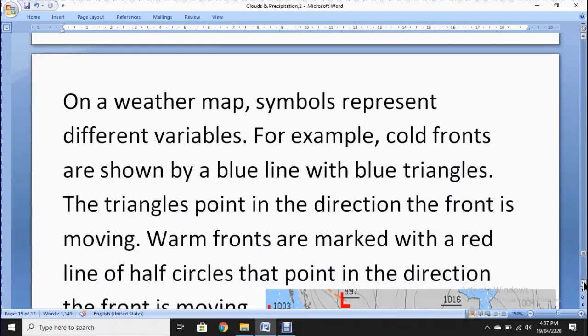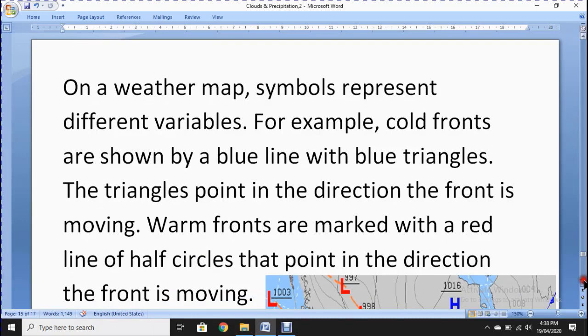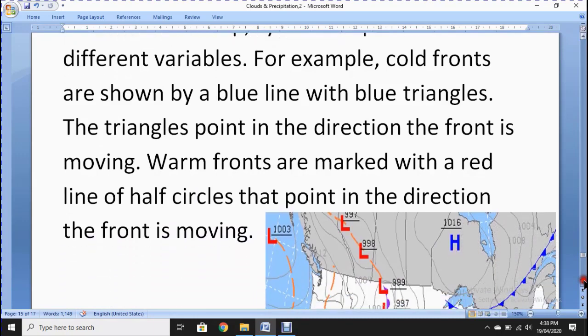On a weather map symbols represent different variables. For example, cold fronts are shown by a blue line with blue triangles. The triangles point in the direction the front is moving. Warm fronts are marked with a red line of half circles that point in the direction the front is moving.